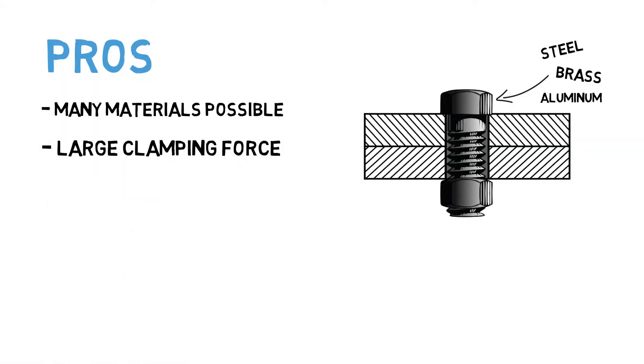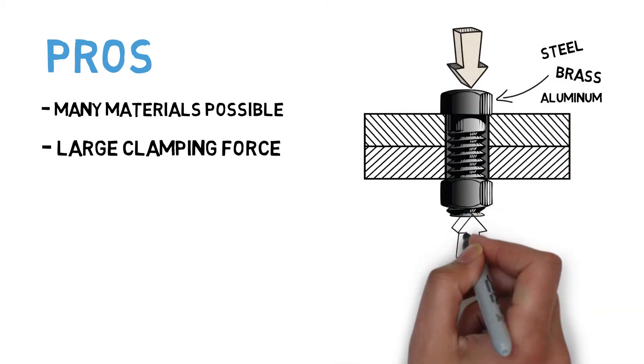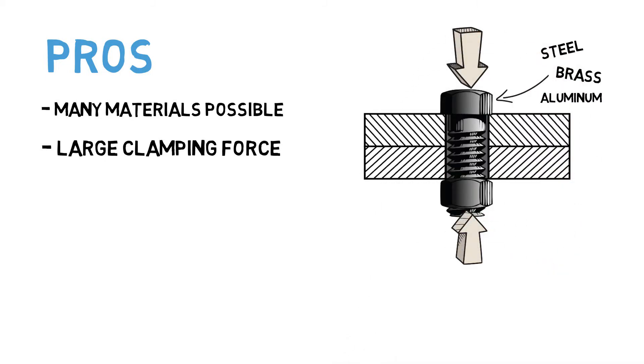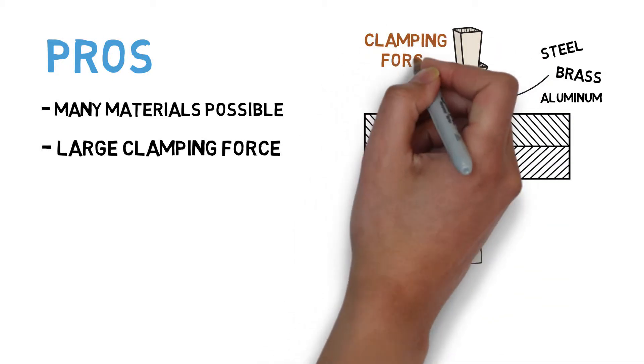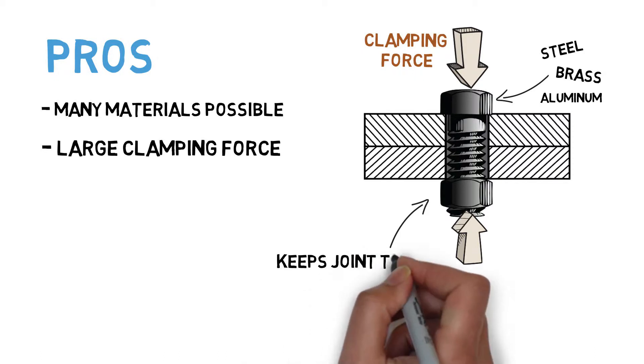Another pro is that threaded fasteners are able to generate large clamping forces. This is particularly important for tension-type joints, and for joints that serve a sealing purpose, where leakage of fluid, such as fuel, could occur if the parts are not sufficiently clamped together.